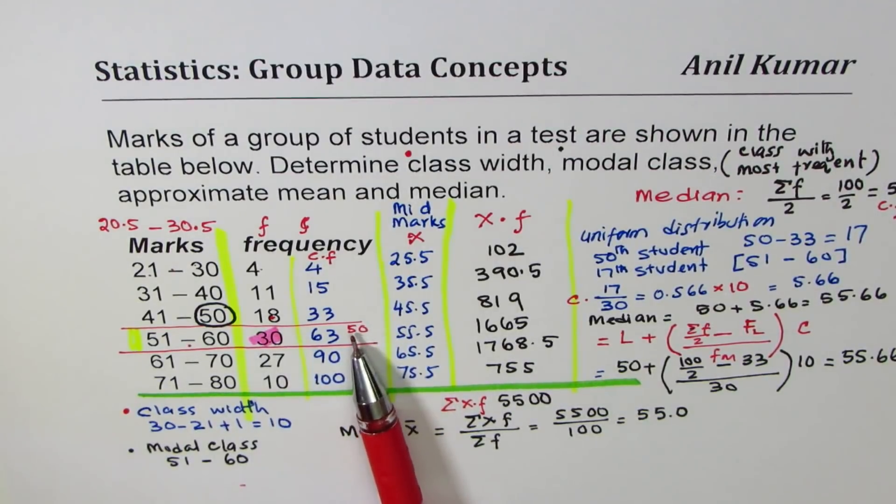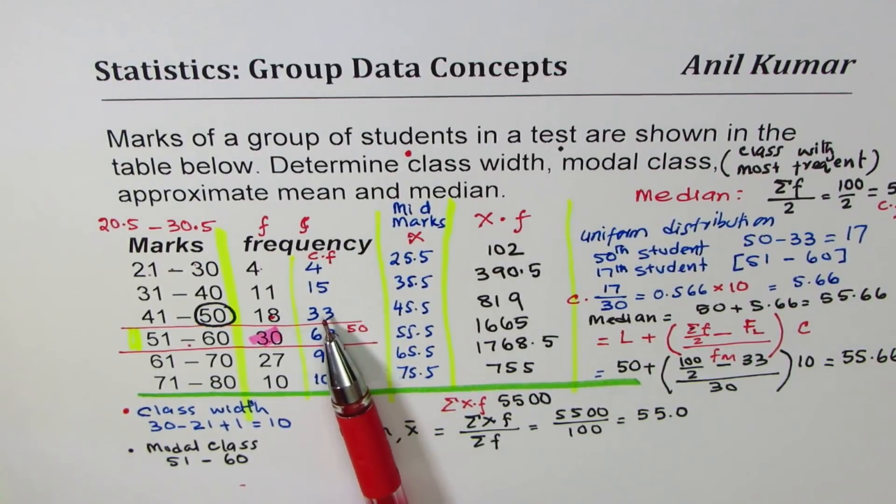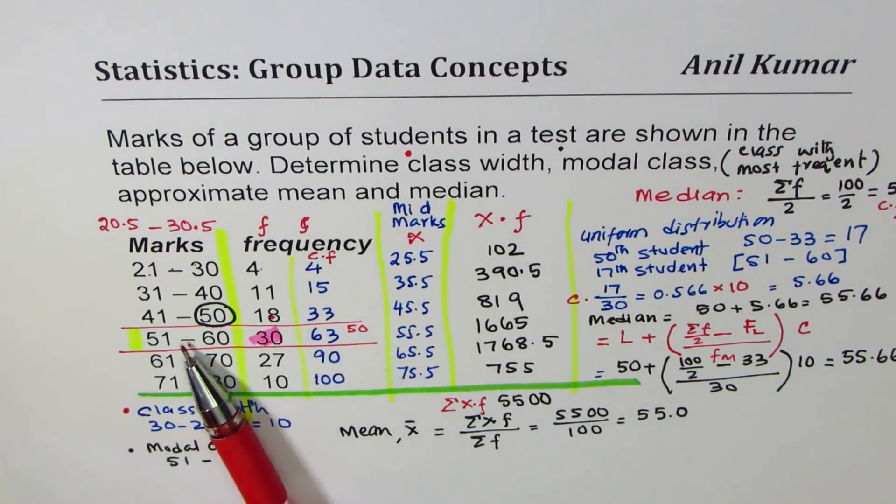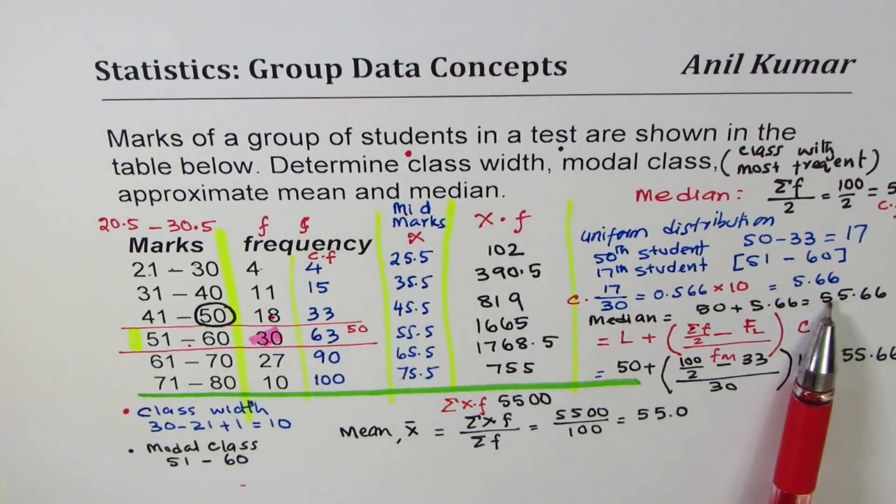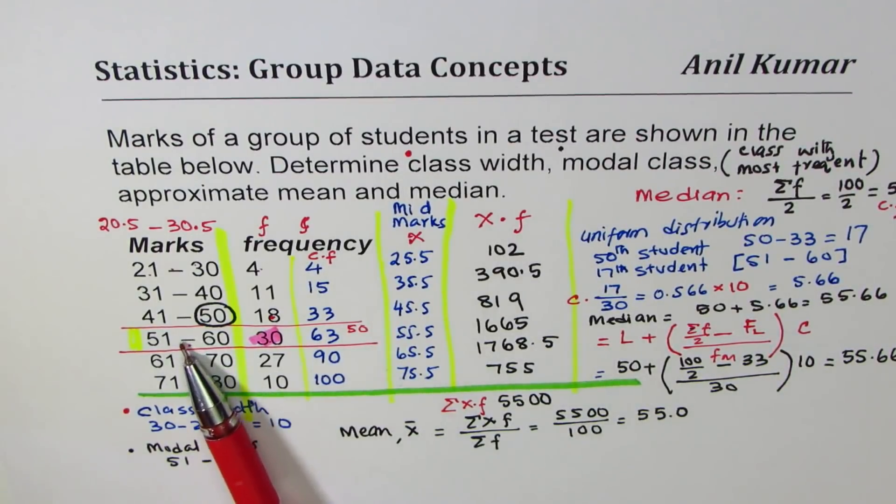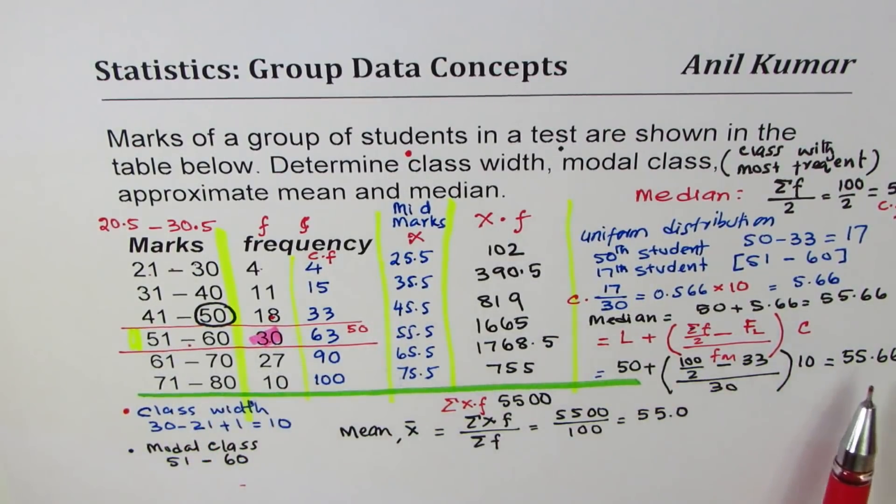So the 50th person was the median. Now 50th is 17 more than 33. This 17th person will be slightly right of the midway because 5.66 is slightly more than half, and that gives us the result approximately 56. So that is how you can find the median.